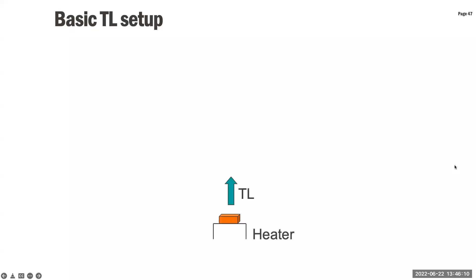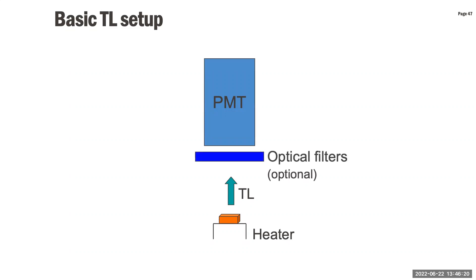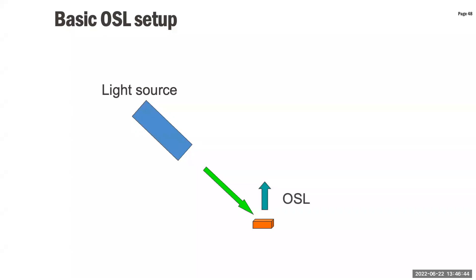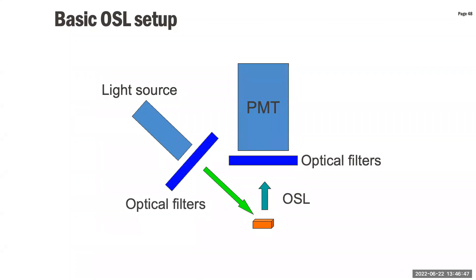The thermoluminescence measurement setup requires simply a heater plate to heat the material, and a PMT to collect the emitted light. Optionally, optical filters narrow down the wavelength of interest. For optically stimulated luminescence, a laser or LED light source illuminates the sample — for example green light stimulation — and the emitted OSL comes out in blue. A PMT with filters blocks the intense green stimulation light so only the blue OSL signal is detected.